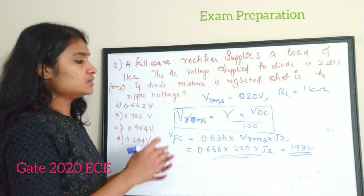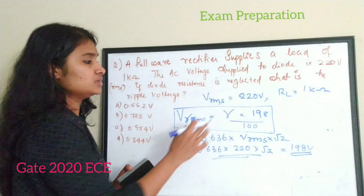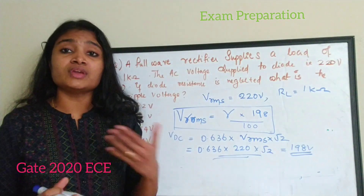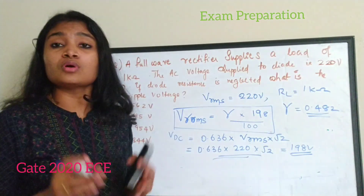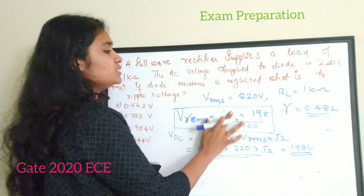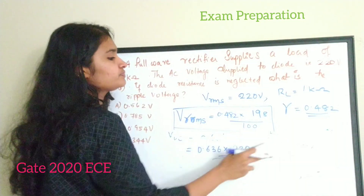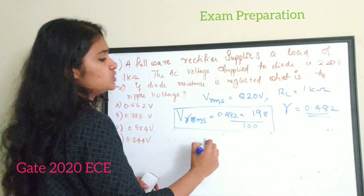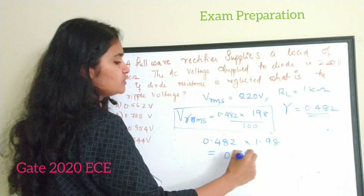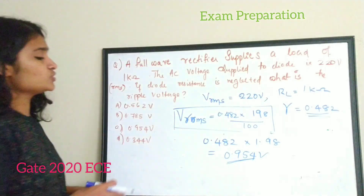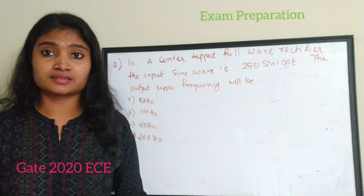Now substitute the V_dc value of 198 into the main equation for V_γrms. We also need the ripple factor. For a full wave rectifier, the ripple factor gamma is a constant value: gamma equals 0.482. Substituting: 0.482 times 1.98 gives you 0.954 volt. The correct answer for this question is option C — V_γrms equals 0.954 volt.